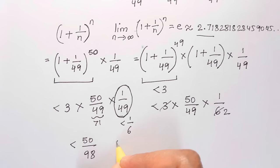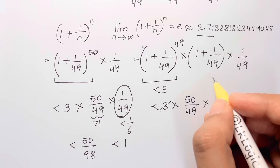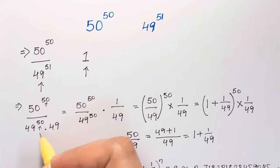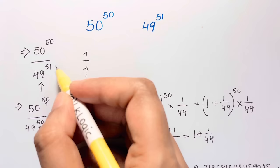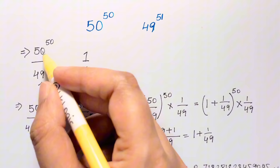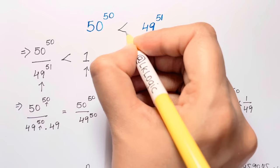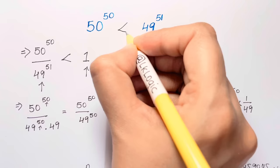All these terms combined equal the left-hand side, which we are comparing to 1. Since this is less than 1, we can conclude that 50 to the power of 50 is less than 49 to the power of 51. Thank you so much for watching — bye bye, take care!